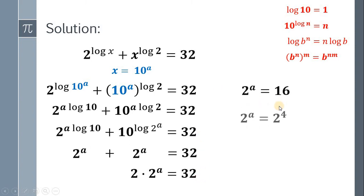Take note that 16 is equal to 2 raised to 4. So, we have 2 raised to a equals 2 raised to 4. It follows that a is equal to 4. Now, we got the value of a but we want the value of x. Don't forget that x equals 10 raised to a. Therefore, x is equal to 10 raised to 4 or simply x equals 10,000.